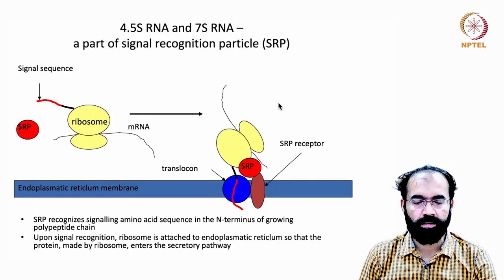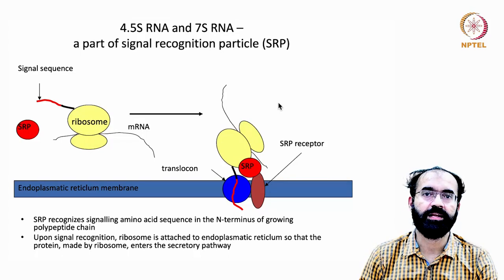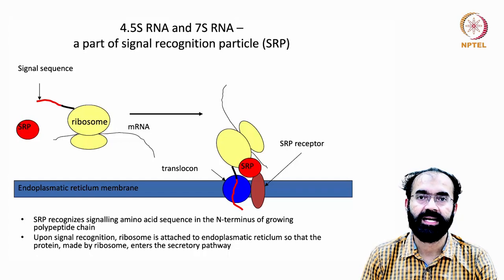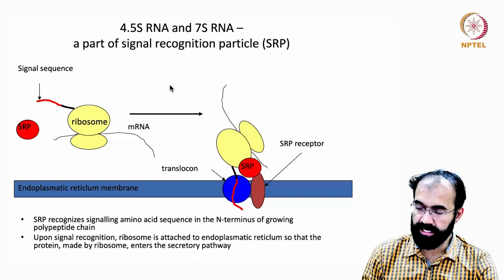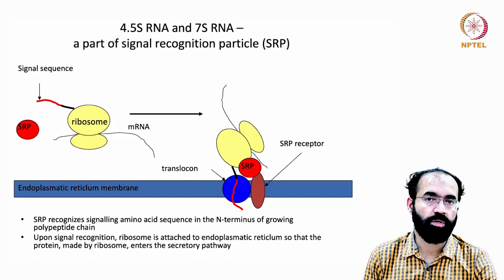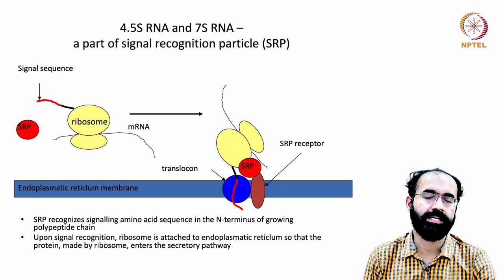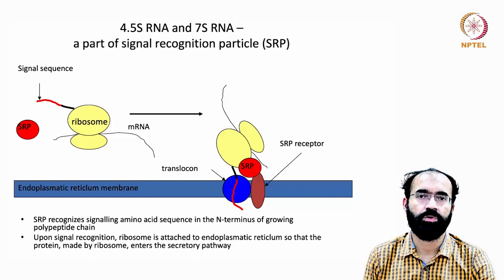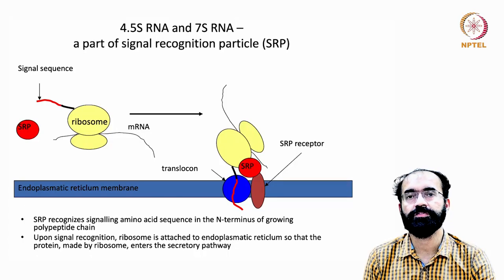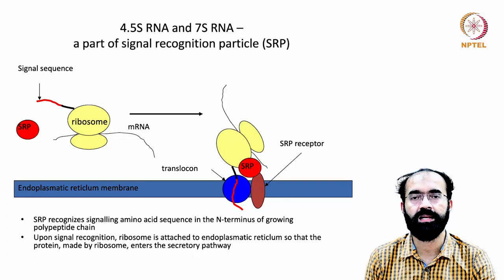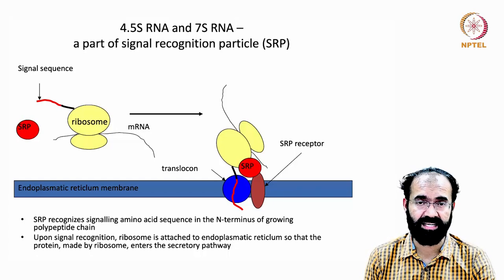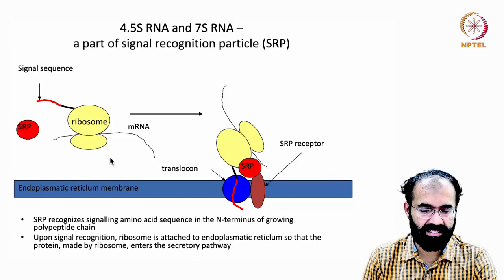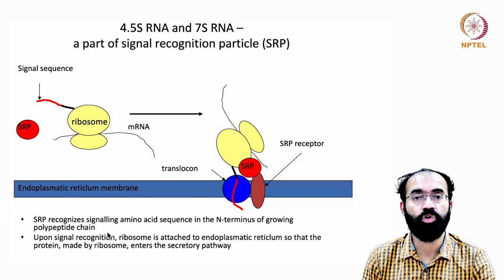Welcome back to another session of RNA biology. In the previous class we were trying to understand the signal recognition particle, how it governs the movement of proteins that are supposed to be pushed out of the cell — secretory molecules like growth hormone, many enzymes, and several other proteins whose function is outside the cell. These proteins always have a signal peptide sequence that must be recognized by the signal recognition particle and pushed into the lumen of the endoplasmic reticulum.